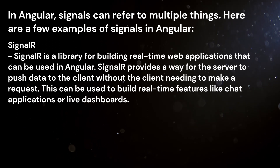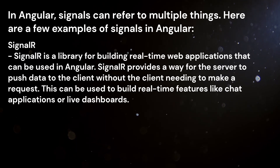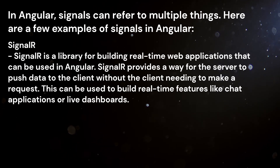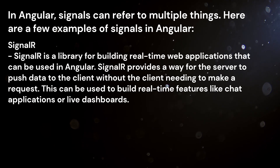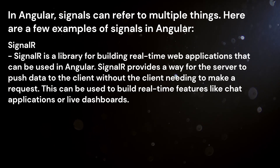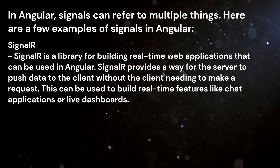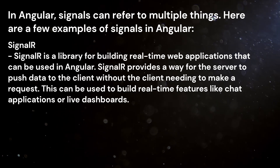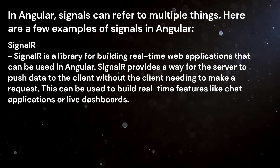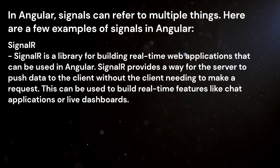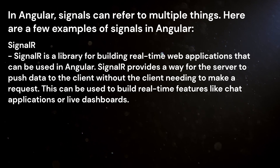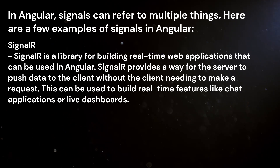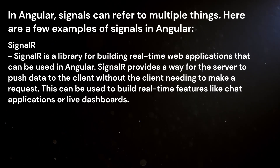SignalR — SignalR is a library for building real-time web applications that can be used in Angular. SignalR provides a way for the server to push data to the client without the client needing to make a request. This can be used to build real-time features like chat applications or live dashboards.